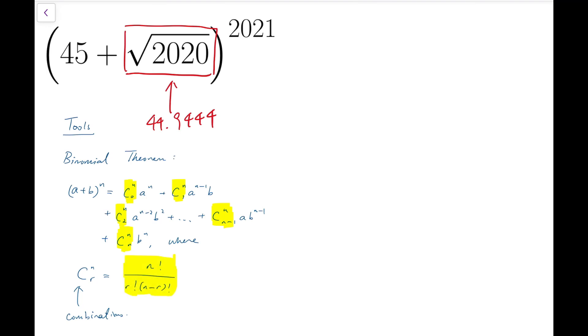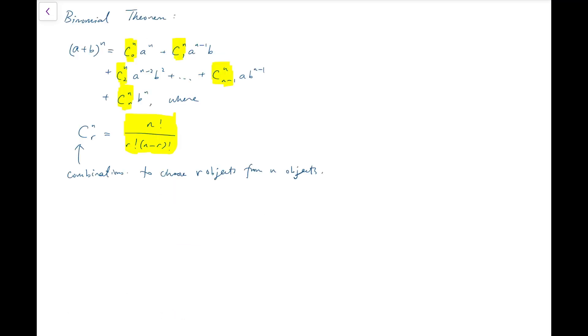In fact, this is the number of combinations for us to choose r objects from around n objects. So we're going to use this to help us expand this expression. Before diving into that complicated expression, let me first demonstrate a much easier example.